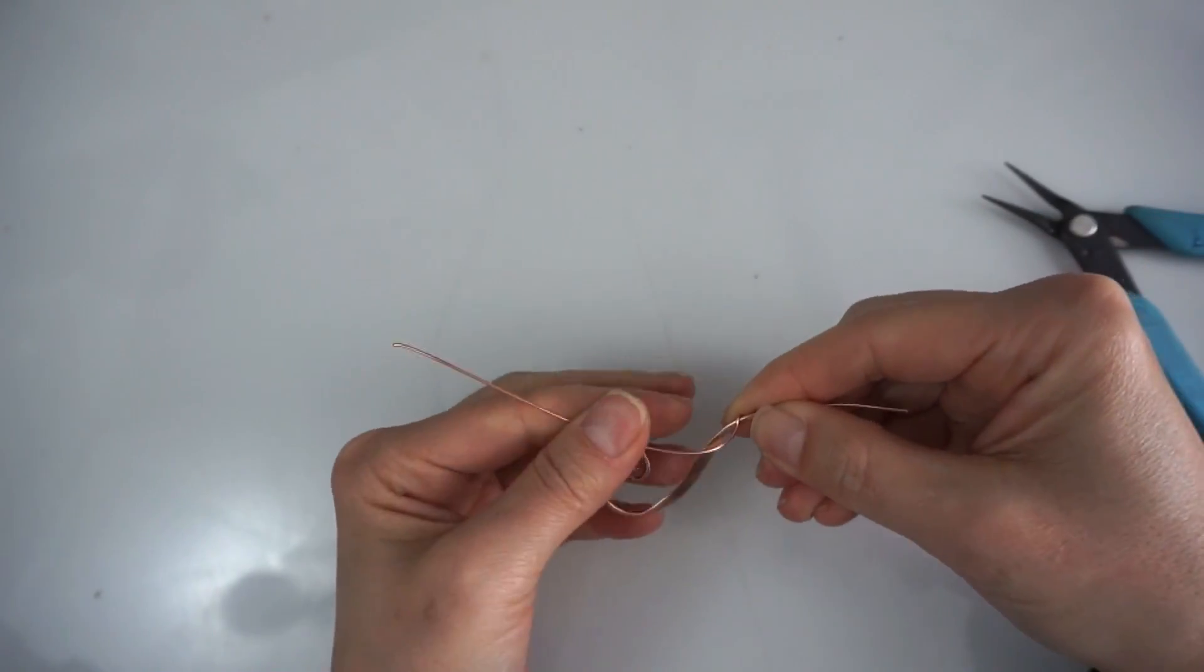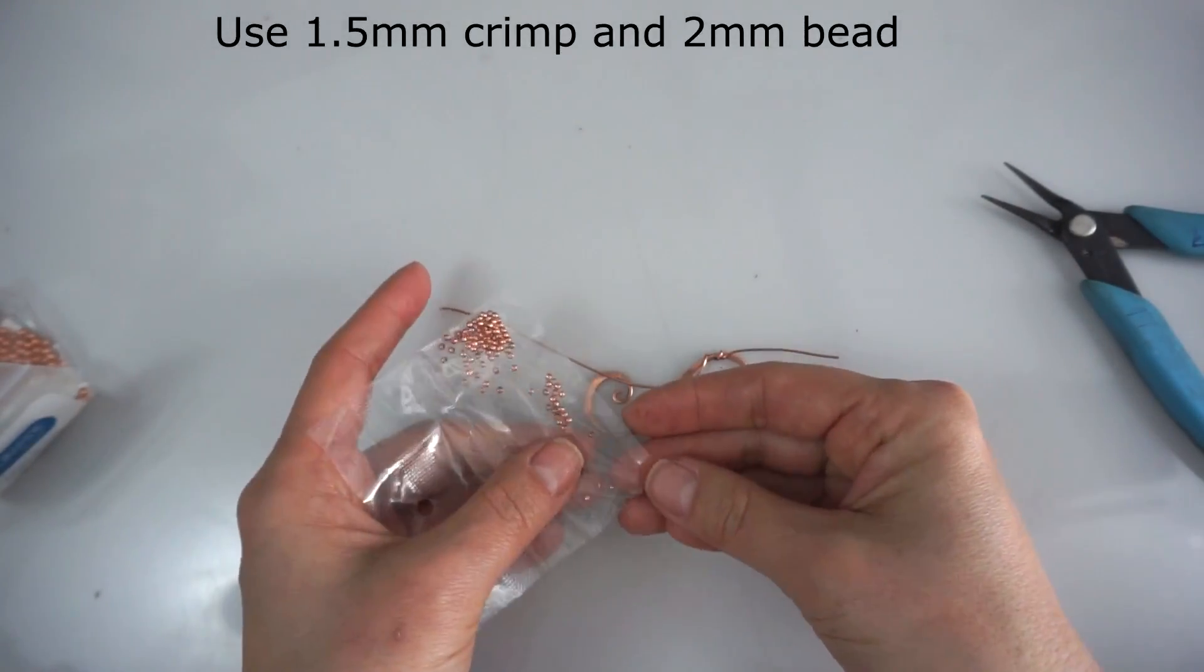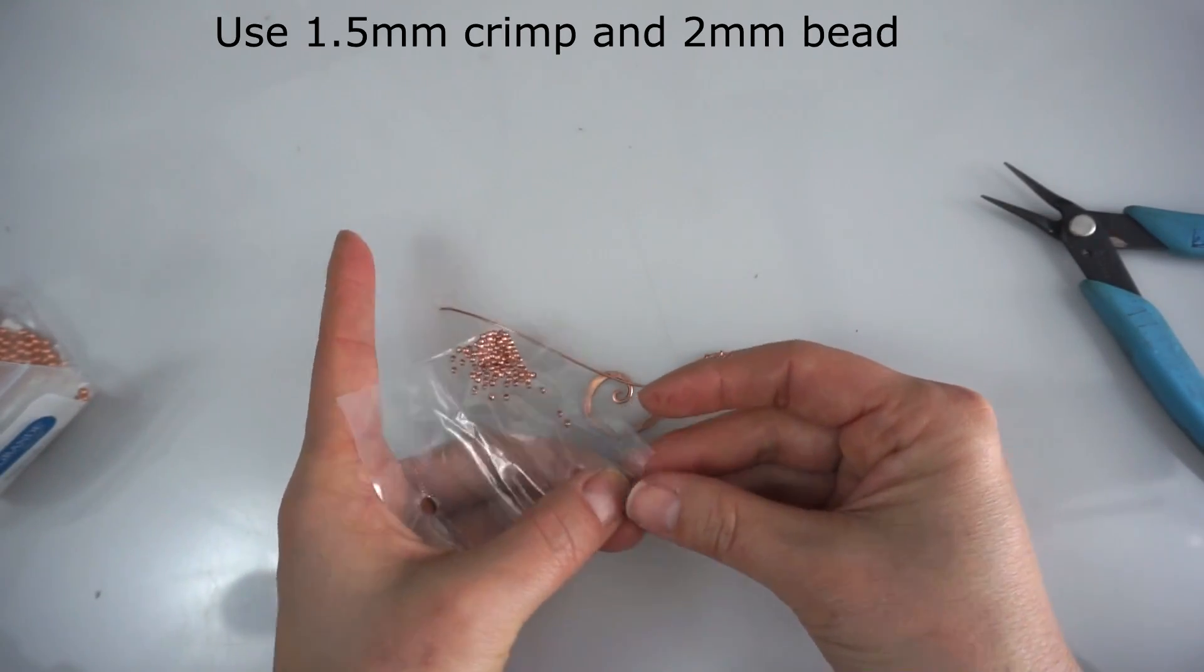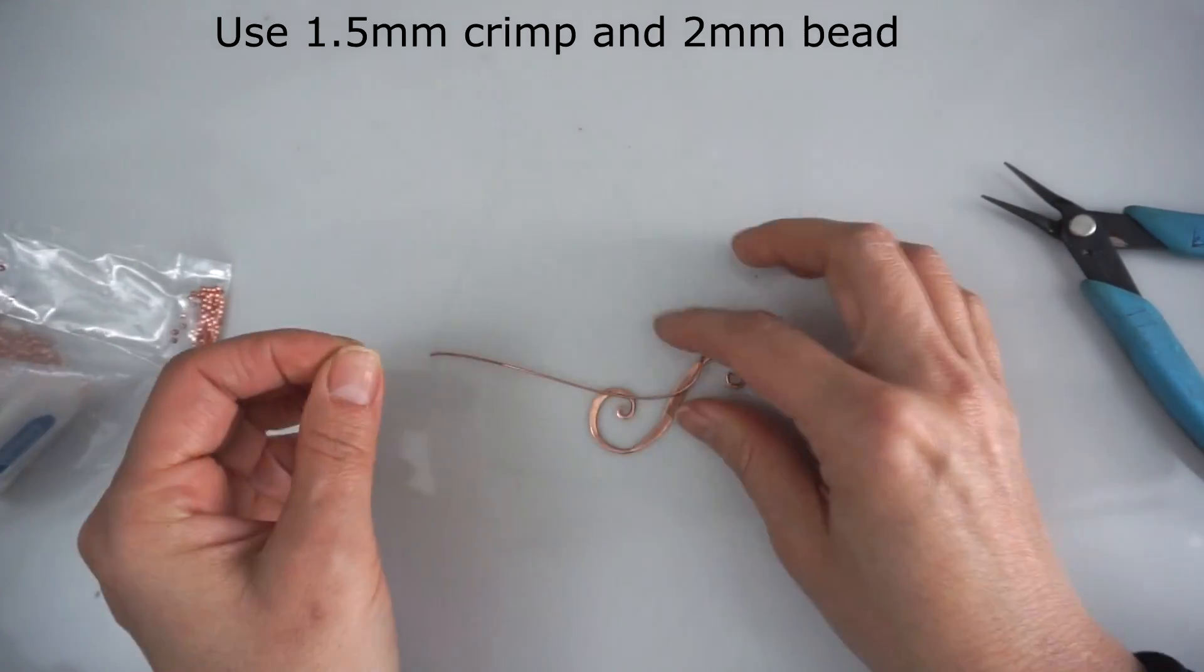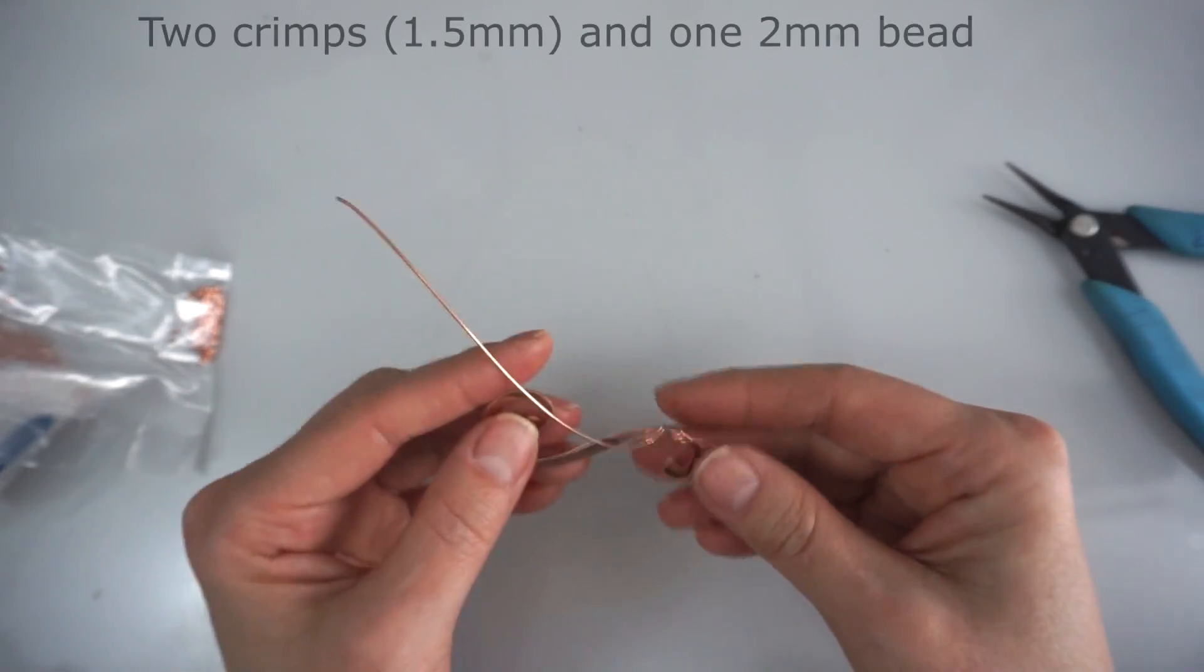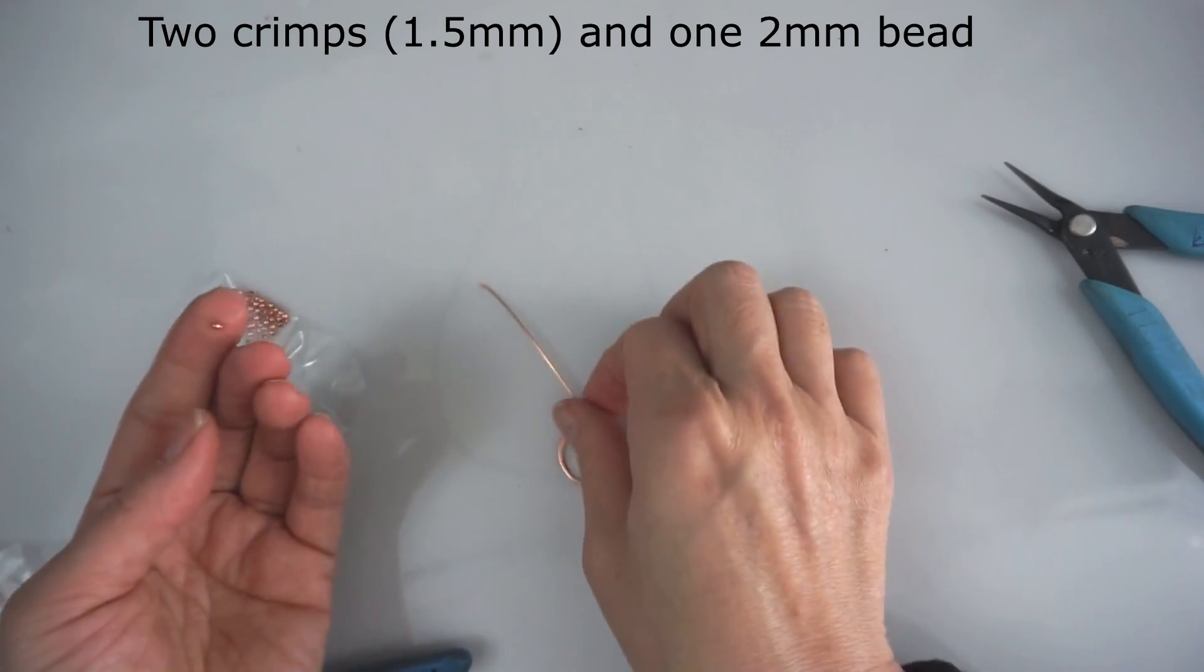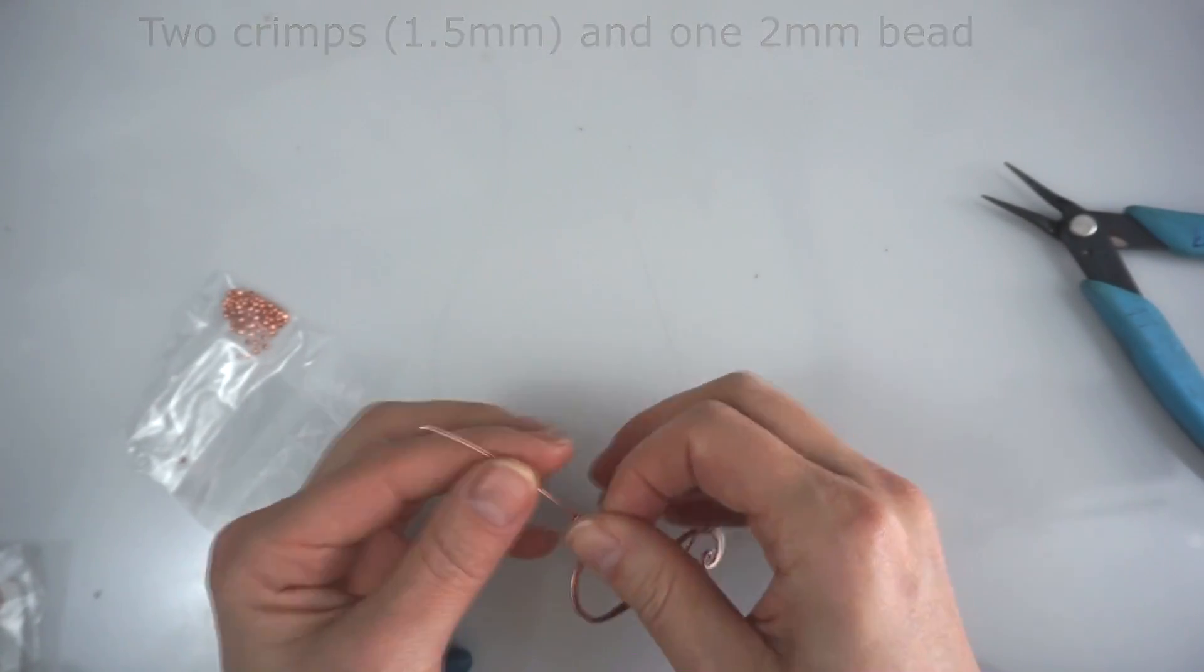I like to use beads in my work. Here I'm using beads and cream, because cream has a big hole and it fits perfectly with my 20 gauge wire. So I'm using two creams and two millimeter beads.